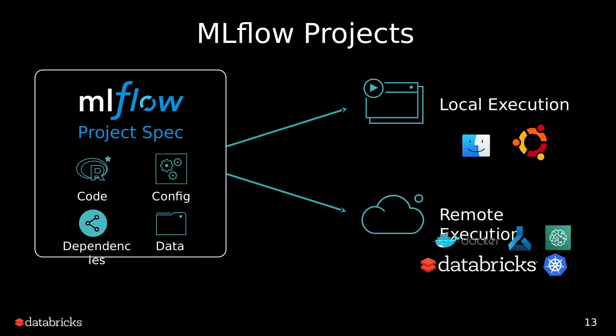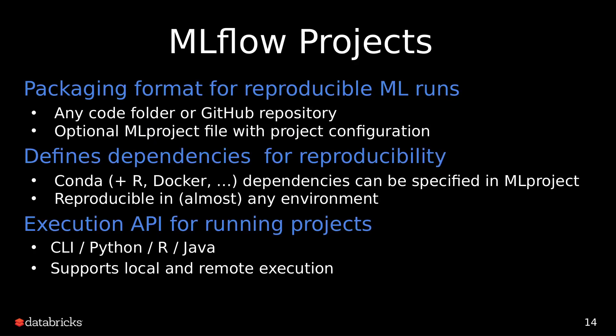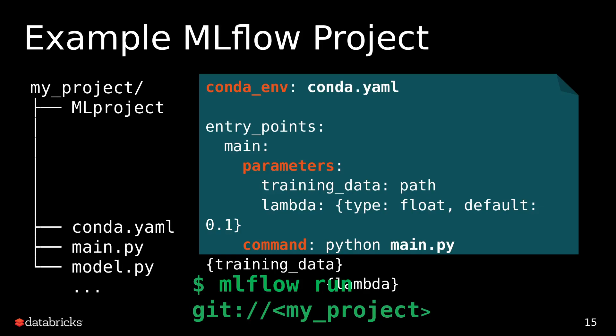Then you have MLflow Projects. MLflow Projects is for when you have finished doing all the analysis and trained your model, and you want to get a final package of your model and training file so that it can run on any environment. You package it as a project and then run it any way you want. This is an example of an MLflow project packaged as a conda file — you can also package it as a Docker file. It's written in YAML, and you have the entry points, the kind of parameters you are using, and the main command when the file is run. We'll look at all these in detail later.